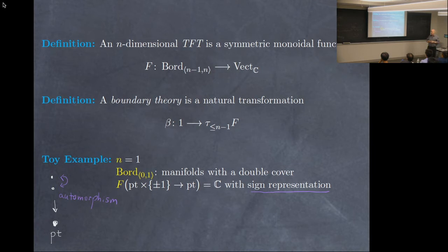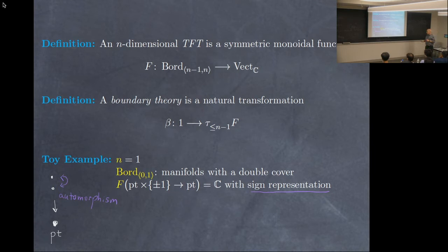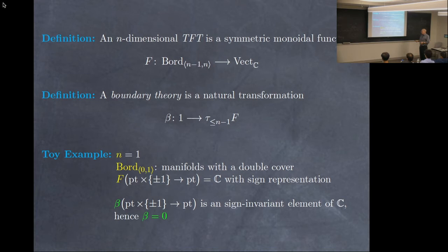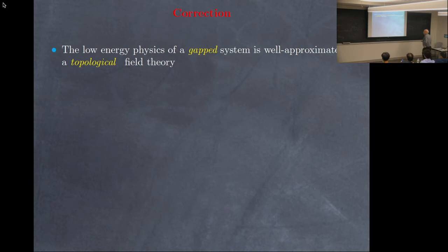Here's a toy example to illustrate why you might have a situation in which no gapped boundary theory exists. This is 0+1 dimensions. Think of a theory with a global cyclic symmetry of order 2 — these manifolds come with a double cover, which is a background gauge field. A double cover has an automorphism that flips the two sheets. When we evaluate our topological quantum mechanics on this configuration, we get a one-dimensional vector space and a representation of this automorphism — I take it to be the sign representation, where the non-trivial element acts as minus 1. A boundary theory must attach an invariant vector, but the only invariant vector is 0. So this is a toy example showing we might not have non-zero boundary theories.